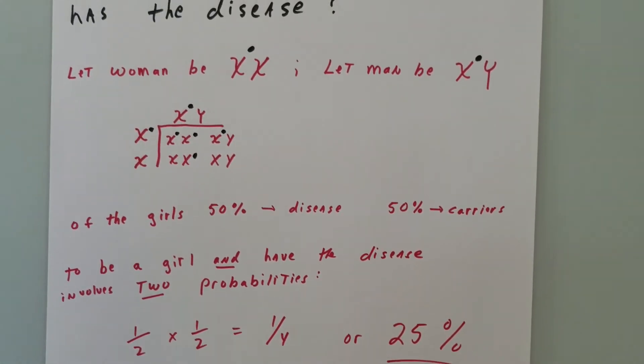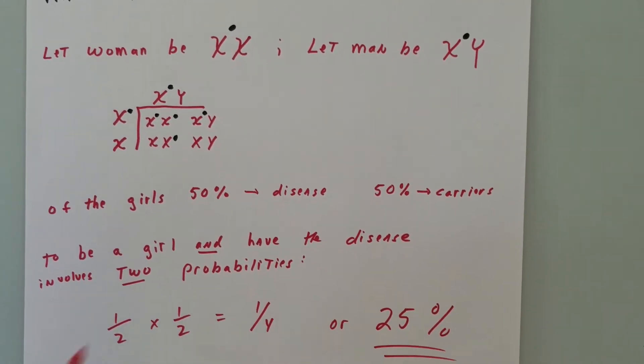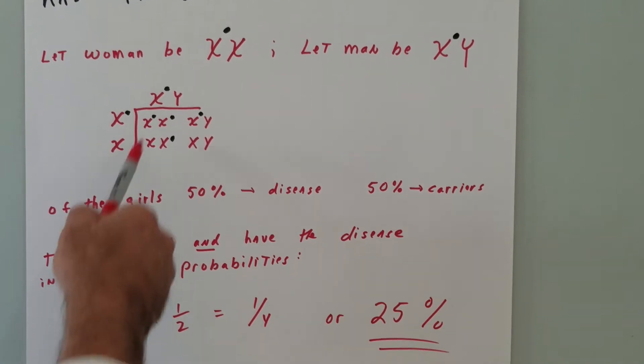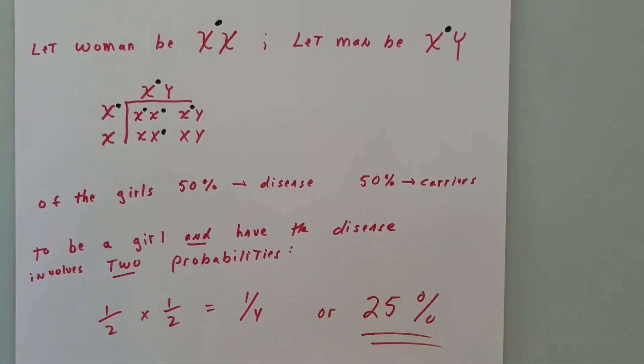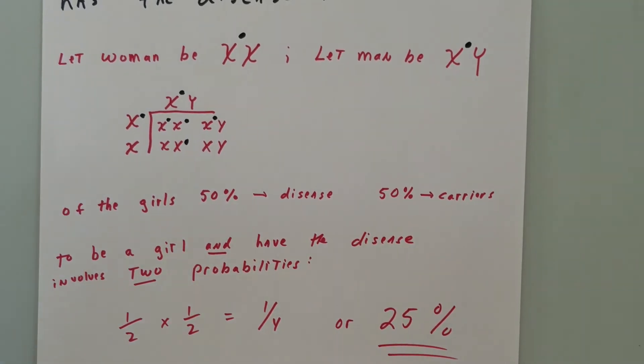To be a girl and have the disease, we're going to take into account those two probabilities. So to be a girl or a boy, you have a one out of two chance. So it's a half to be a girl, a half to have the disease. Multiplying the two probabilities together, you get one-fourth or there's a 25% chance.